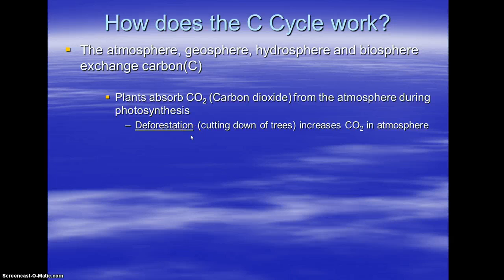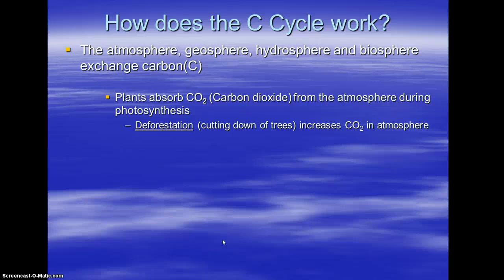A term we didn't talk about yet is deforestation — basically when we cut down the trees in a forest. The problem is that trees are a storage for carbon; they also pull in CO2 from the atmosphere and store it as glucose. If we cut them down, they will not pull in CO2 anymore, and so there's an excess of CO2 in the atmosphere. Another double whammy is when they deforest through slash and burn methods — burning actually releases the CO2 that was trapped as glucose, putting more CO2 in the air, plus the trees aren't around to take in CO2 from the atmosphere.